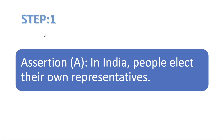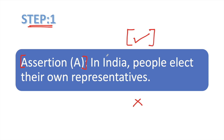In step 1, we will only take our assertion. We will read the assertion: 'In India, people elect their own representatives.' हमें ये देखना है कि ये statement सही है या गलत. अगर ये statement हमें सही लगती है तो हम इसके आगे एक टिक लगा देंगे. As per me, this statement is correct.